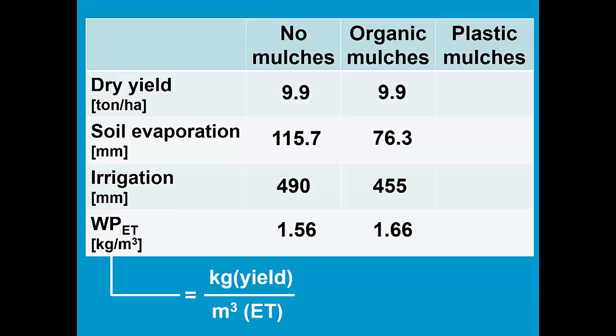When we apply the plastic mulches, we still have the same yield, but evaporation has now reduced to 21.3 mm. As a consequence, we have to apply less water, 420, and the ET water productivity will further increase, because we have the same yield, but with less water lost by evapotranspiration on the field.